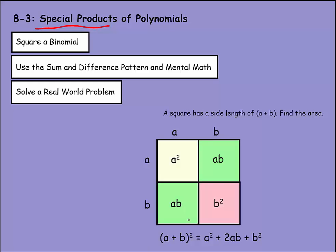If we use the table method like we used last time, we would see that a times a is a squared, a times b is ab, a times b is ab again, and then b times b is b squared. So adding it all together, we'd have a squared plus 2ab plus b squared.